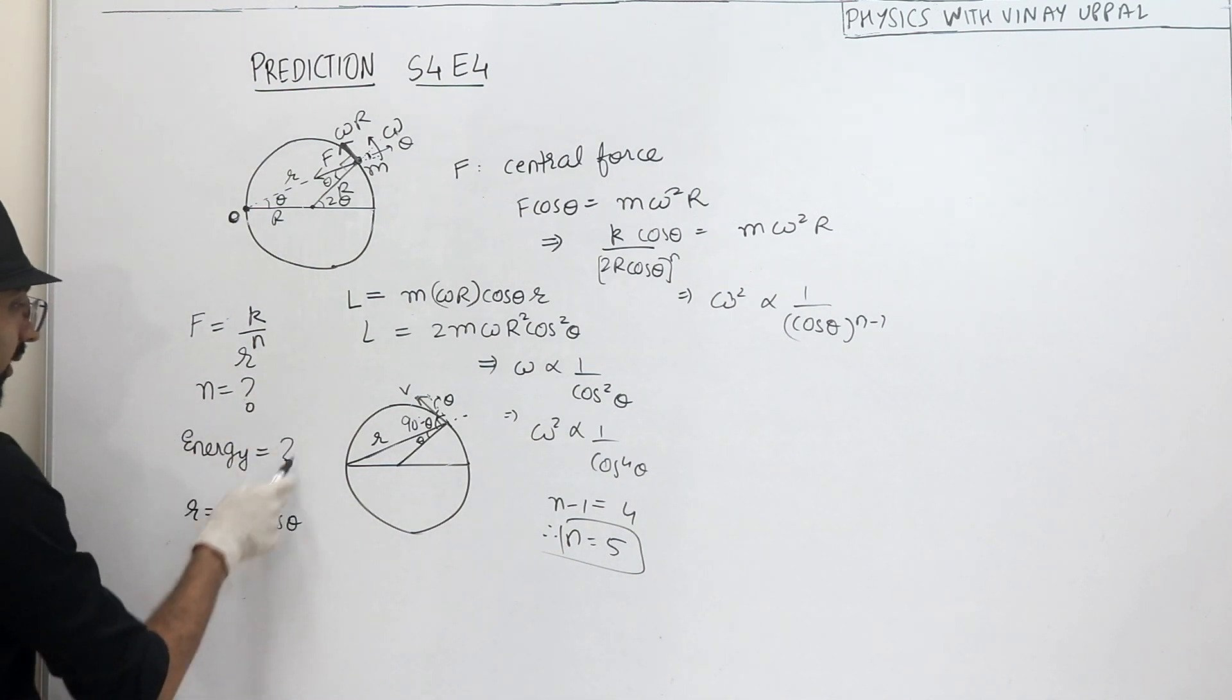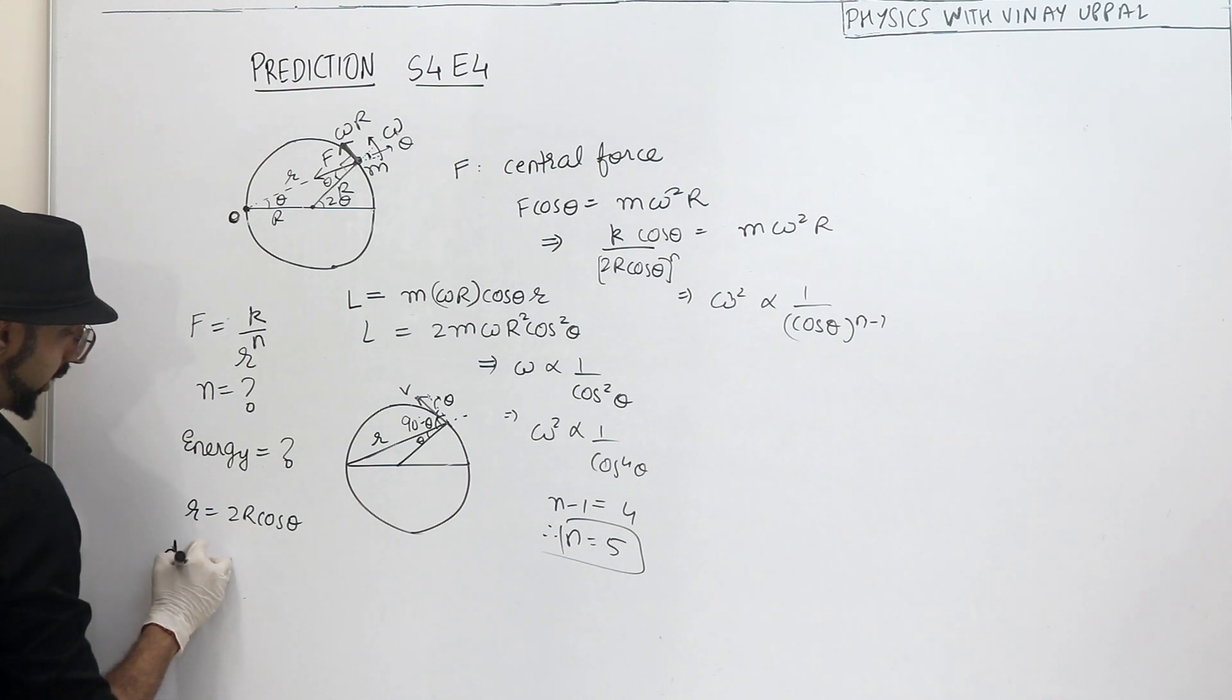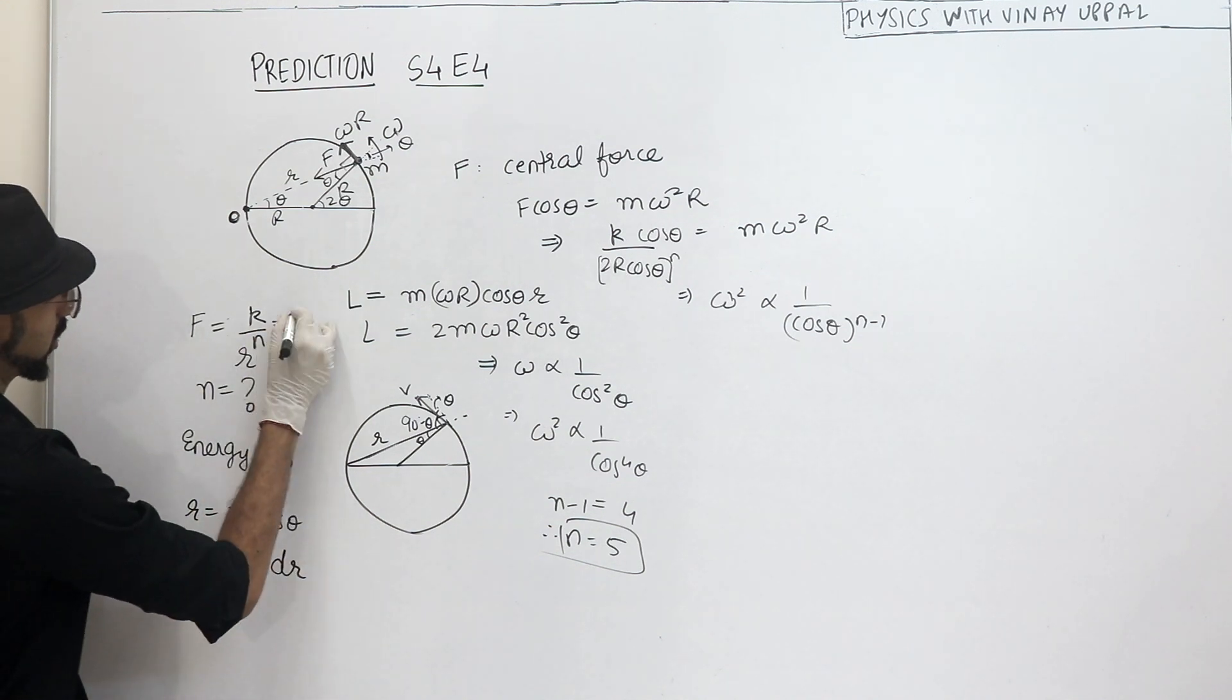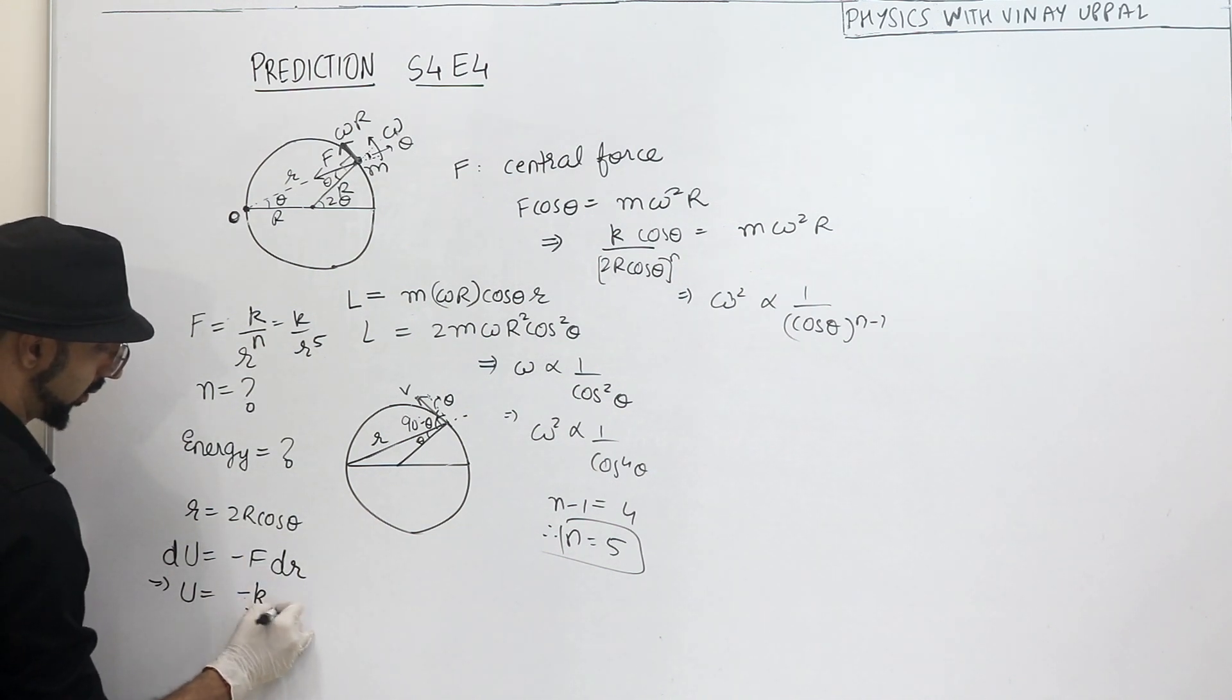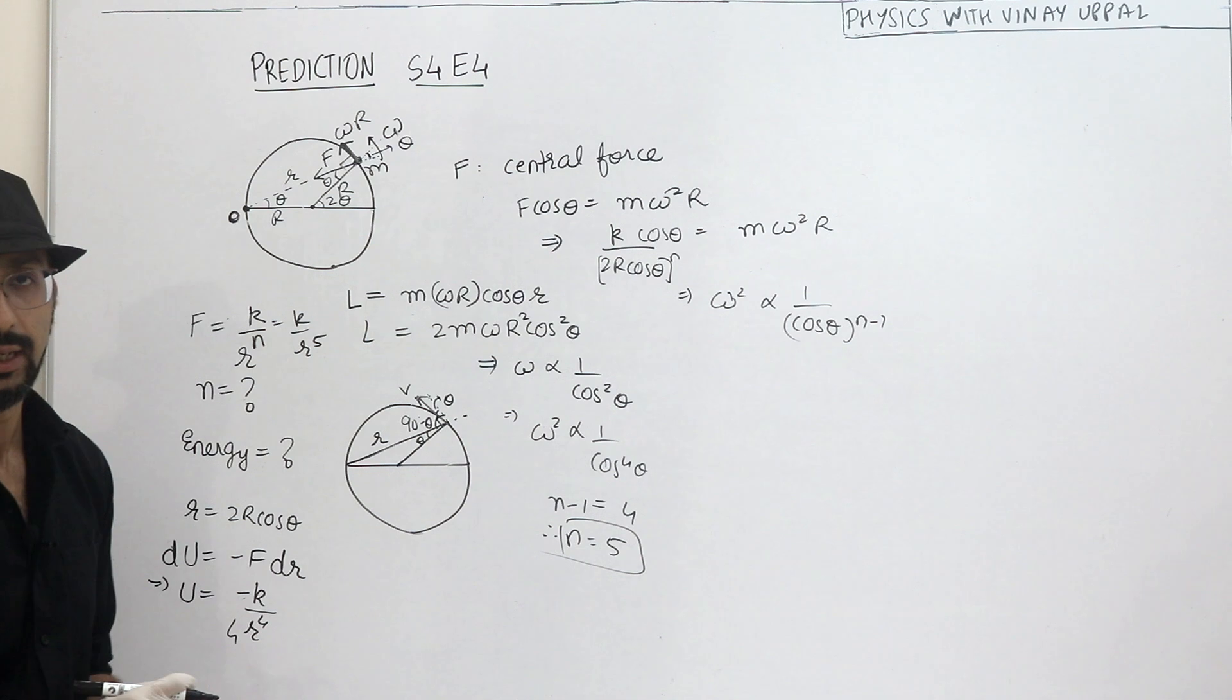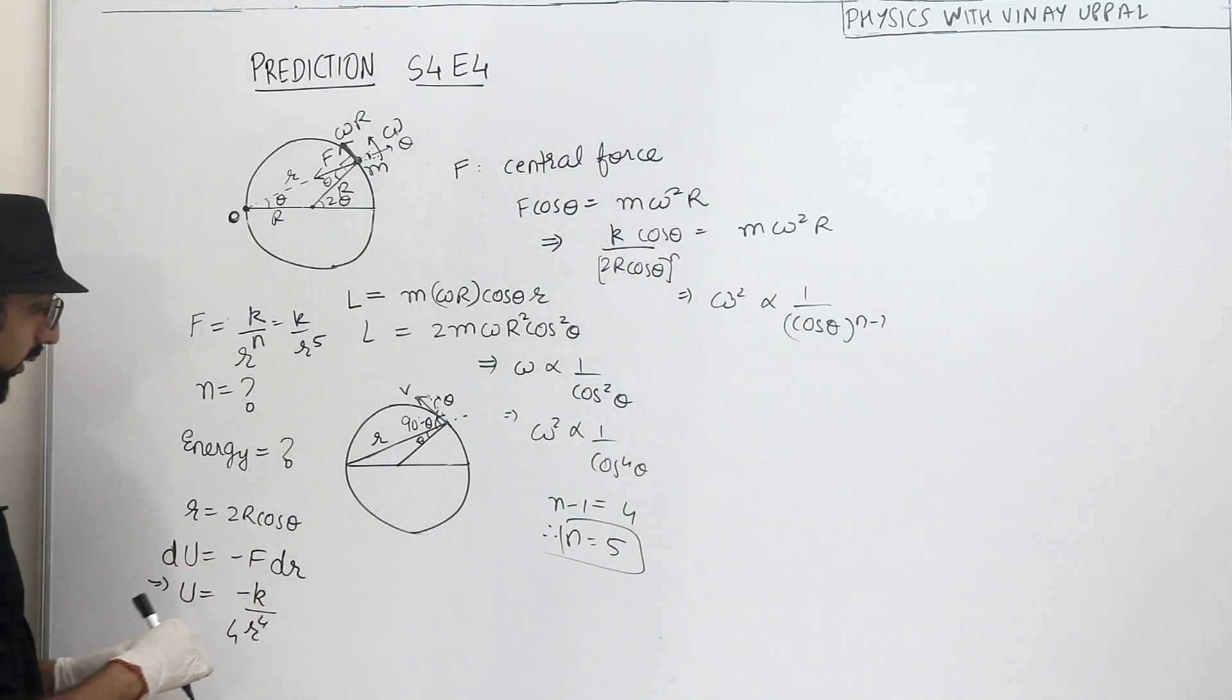Then what do I mean? Let's also calculate the energy. Energy means kinetic and potential. In a central force we can define potential energy. How can I define potential energy? I can say du is minus f dr. This will become minus k by r raise to 4, plus some constant. The constant can be assumed to be 0 because we will take potential energy to be 0 at infinity. That is our standard assumption, like in chapters like gravitation and electrostatics. Here we have central forces involved.